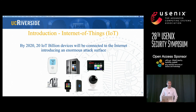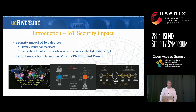By 2020, there will be more than 20 billion IoT devices connected to the internet, introducing an enormous attack surface. The security impact would be huge and twofold: first, there would be a privacy issue for end users who would be direct targets for attackers. And second, there would be an implication for other users when the IoT becomes infected and participates in a botnet. We already saw such examples, such as Mirai botnet, VPN filter, or Prawly.